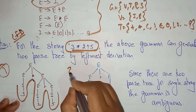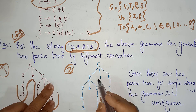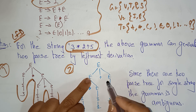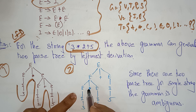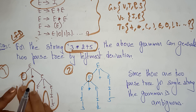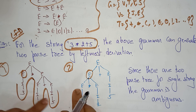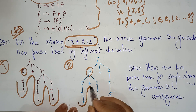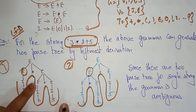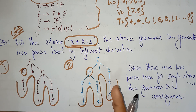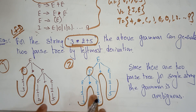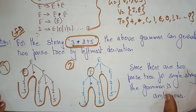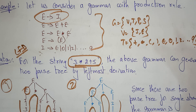The same string can be represented in another way. Instead of starting with E*E, take E → E+E first, then the left E → E*E, substituting I → 3 and I → 2, and the right I → 5, again producing 3*2+5. Since there are two parse trees for a single string, the grammar is ambiguous. If there is more than one parse tree generated by a given grammar, then that grammar is ambiguous. Thank you.